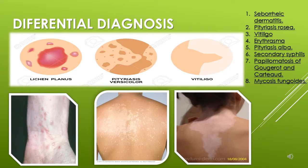You need to pay attention to the differential diagnosis, because different dermatological processes lead to different diseases. When you see patients with pityriasis versicolor, you can confuse it with vitiligo, lichen planus, seborrheic dermatitis, secondary syphilis, erythrasma, and mycosis fungoides.